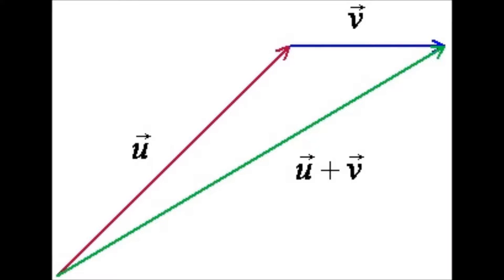Interesting — it went in a new direction altogether. This happens because of vector addition. Vector addition is the operation of adding two or more vectors together into a vector sum. For two vectors, the vector sum is obtained by placing them head to tail and drawing the vector from the free tail to the free head. This is also known as the tip to tail method.